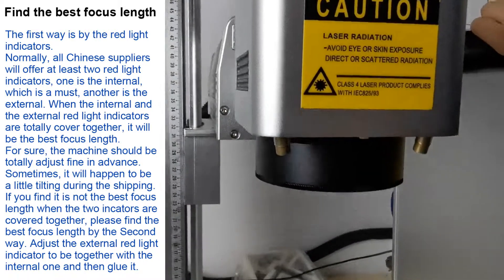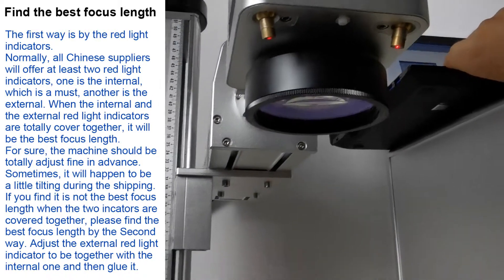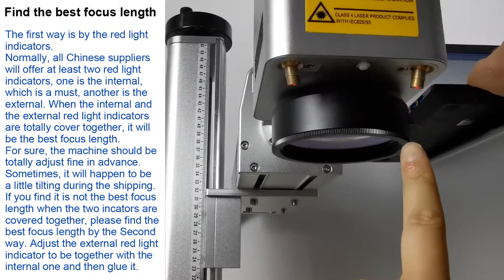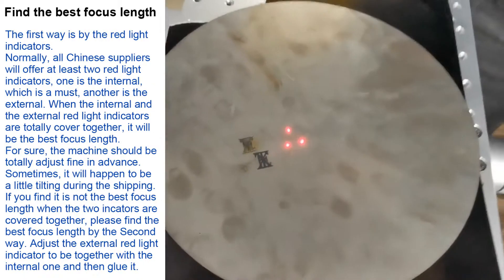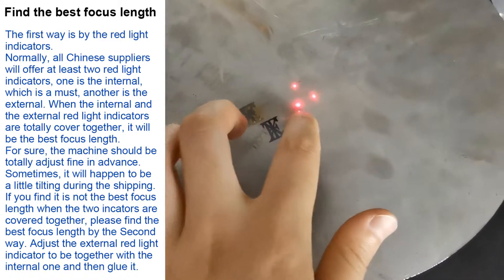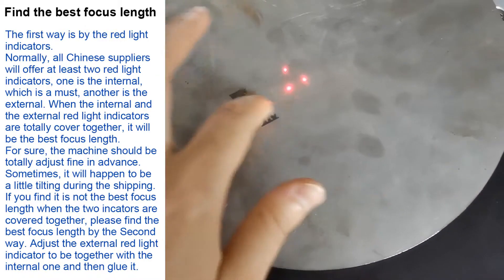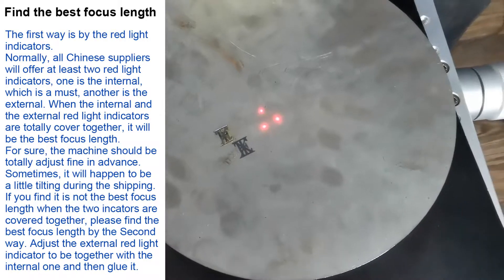This scanner has two external red lights. You can see one, two. So there will be three red spots here. One is the internal red light and the other two are the external red lights.